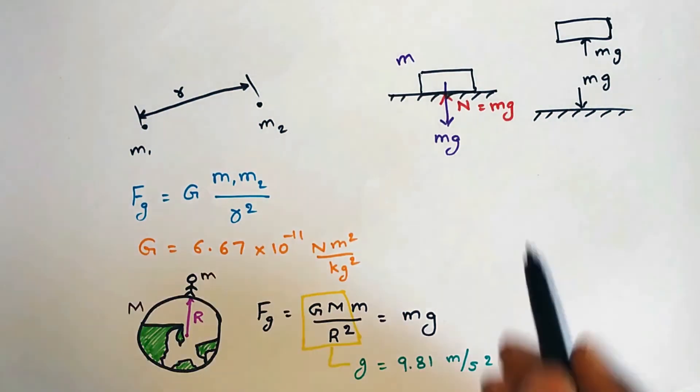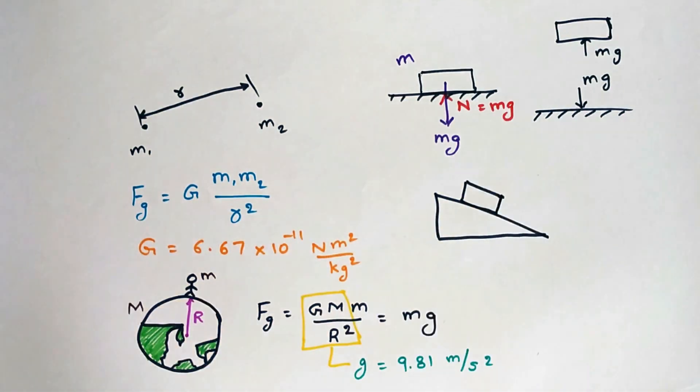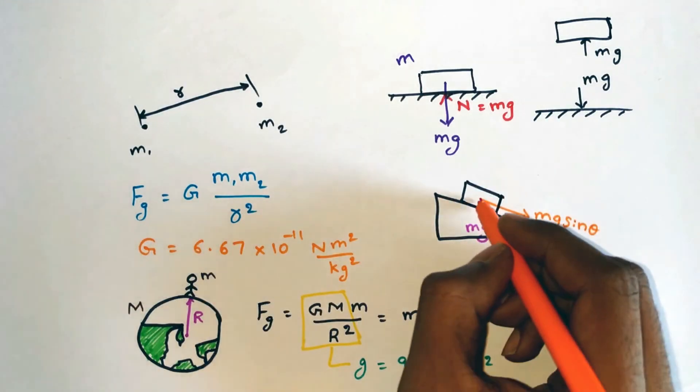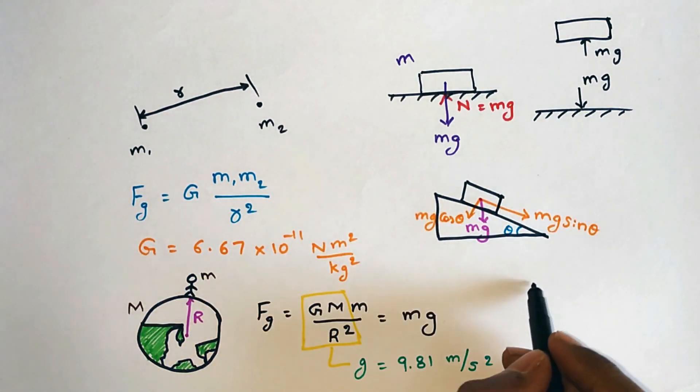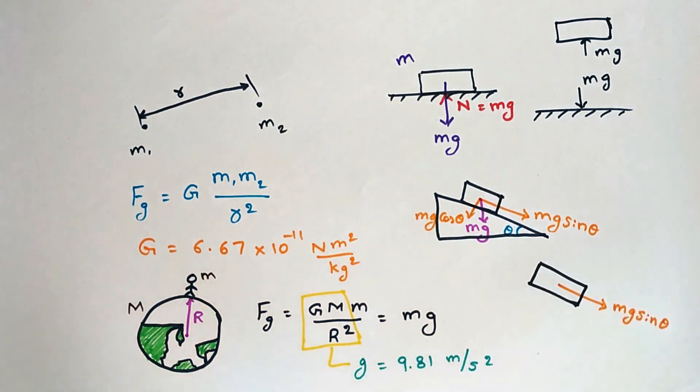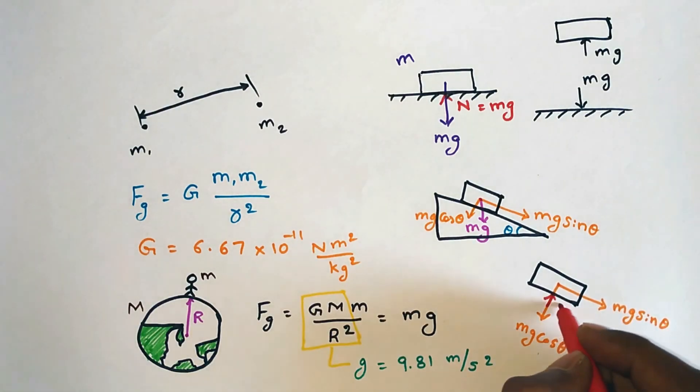Now, if we consider a mass m on an inclined plane then the force mg acts towards the center of the earth and this force can be resolved into two perpendicular components which are mg sin theta and mg cos theta where theta is the angle of inclination. So, the normal reaction in this case will be perpendicular to the inclined plane.